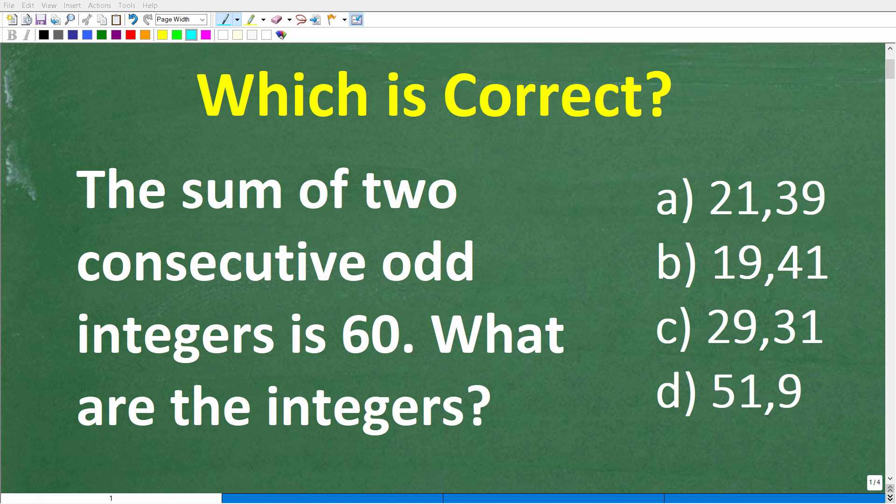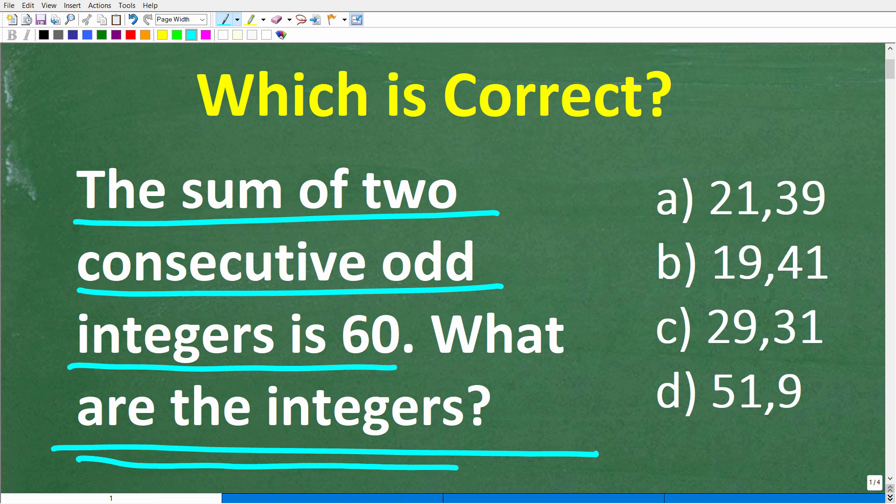Okay, so if you have a pretty good math vocabulary, this will be a very easy problem to solve. What we have here is a math word problem. Let me go ahead and read the problem. The sum of two consecutive odd integers is 60. What are the integers?